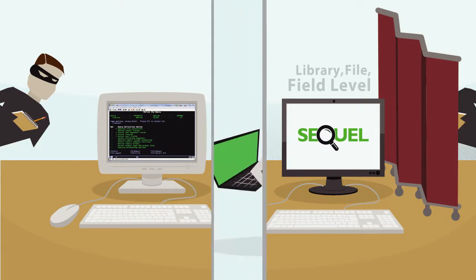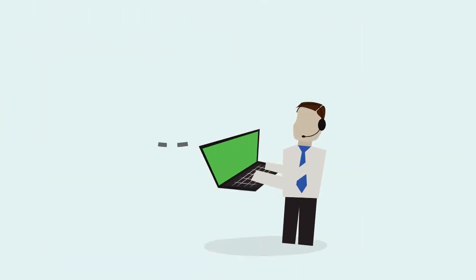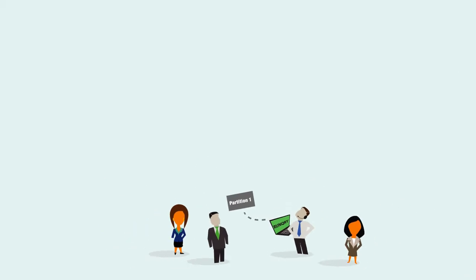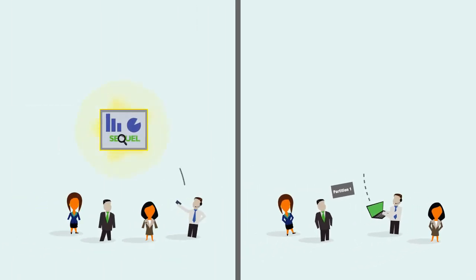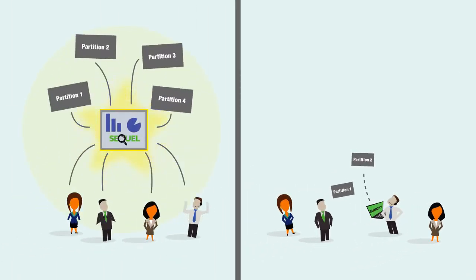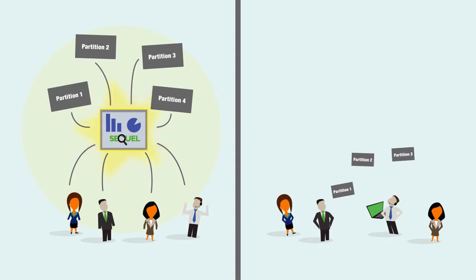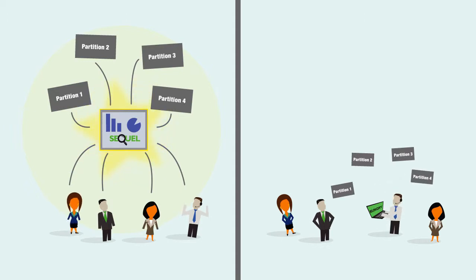When it comes to big data and partitioned files, Query 400 can only access one partition at a time. Even skilled users have to run many queries to compile a complete result. SQL works with your large table partition files in their entirety for all members, making it easier to manage big data and accurately report on multiple partitions at once.